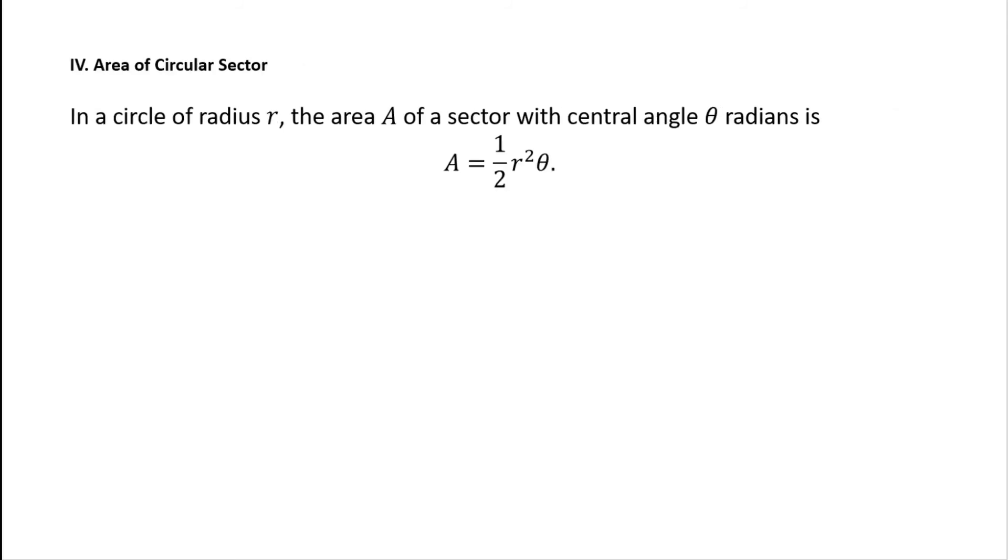Roman numeral 4, area of a circular sector. A circular sector is what you get when you slice a pizza. In a circle of radius r, the area A of a sector with central angle θ radians is given by A equals one-half r²θ.